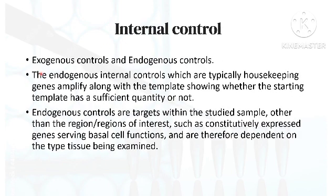Internal control is of two types: exogenous and endogenous. Endogenous internal controls are typically your housekeeping genes. For example, we use ABL as a housekeeping gene for BCR-ABL. A housekeeping gene is a constitutively expressed gene which serves basal cell function and is independent of the type of tissue you are using — it is present in all cells of the body, so you can take any type of tissue for your PCR reaction. The commonly used housekeeping gene in hematology labs is ABL.